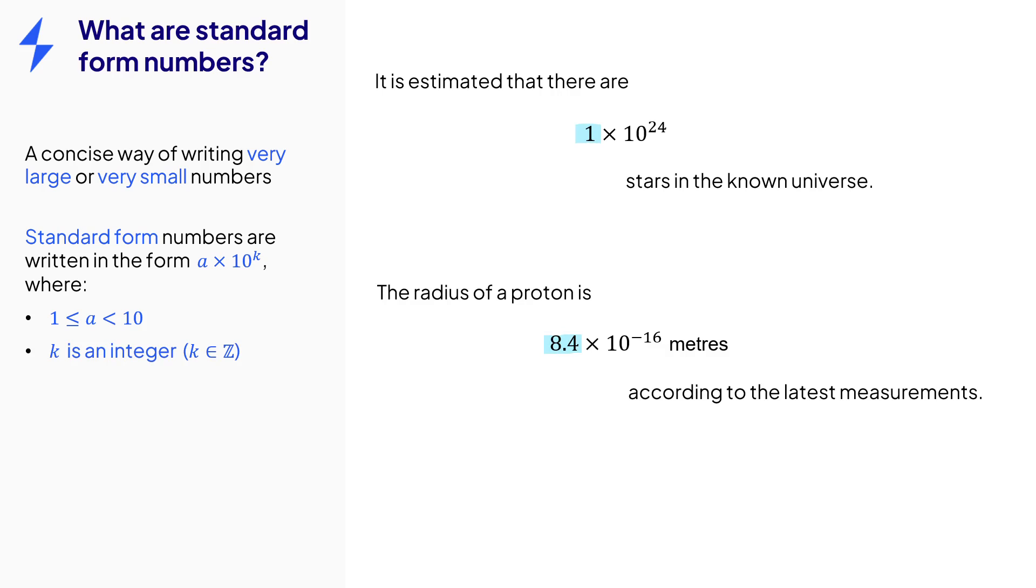And k, the power of 10, needs to be an integer. And note from the second case that it can be a negative integer, as well as being a positive integer.